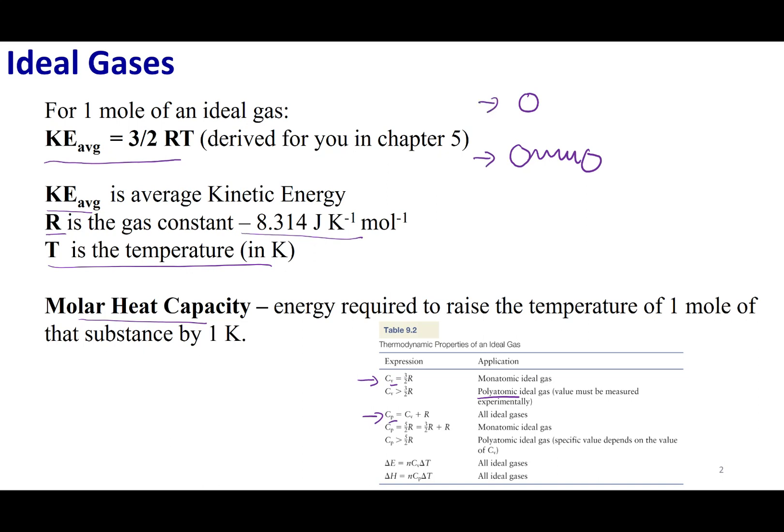Now if I want to try to get this to ricochet around the room, just like my single tennis ball, I'm going to have to use more energy to try to get that going. Now if I need more energy, that means my molar heat capacity has to go up. And that's what you'll see here. For polyatomic ideal gases, it is going to be greater than 3 halves R and 5 halves R for me doing this at constant volume and constant pressure.